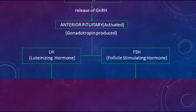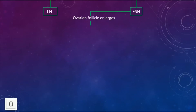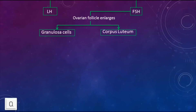GnRH activates the anterior pituitary to produce gonadotrophins, which are LH and FSH — follicle-stimulating hormone. With the help of FSH, the ovarian follicle enlarges, and granulosa cells and corpus luteum of the ovarian follicles develop.